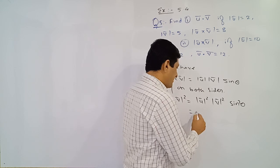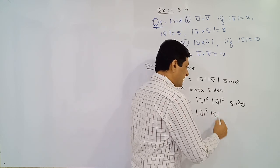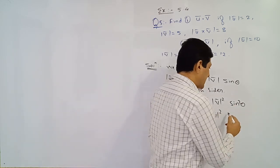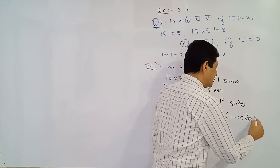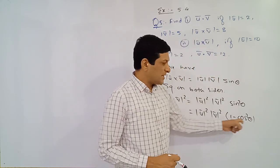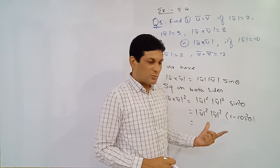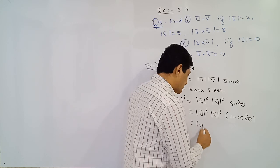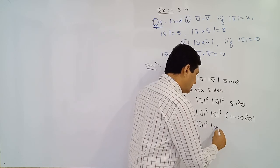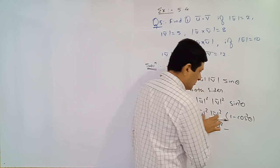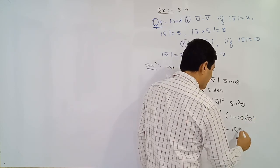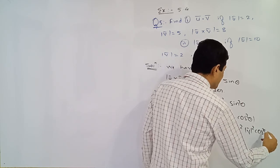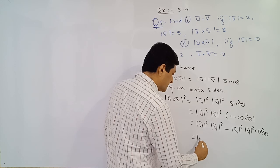On the right side we have square of magnitude of u-bar into square of magnitude of v-bar. Now sine squared theta can be replaced by 1 minus cos squared theta. Multiplying both terms in the bracket by square of magnitude of u-bar and v-bar, we get: square of |u| times square of |v| minus square of |u| times square of |v| times cos squared theta.